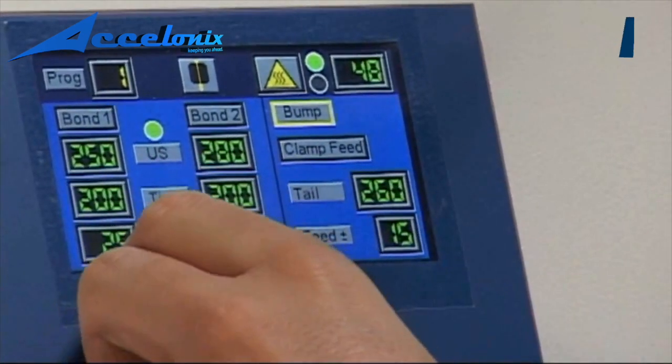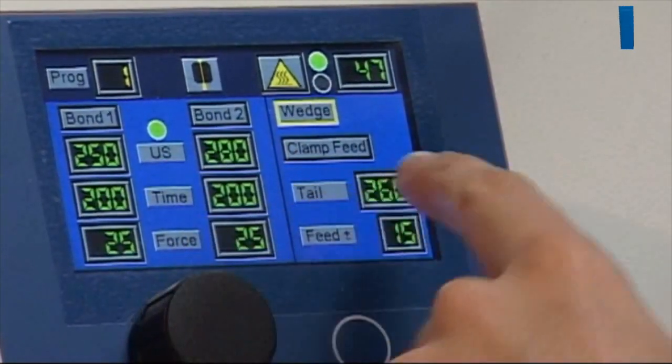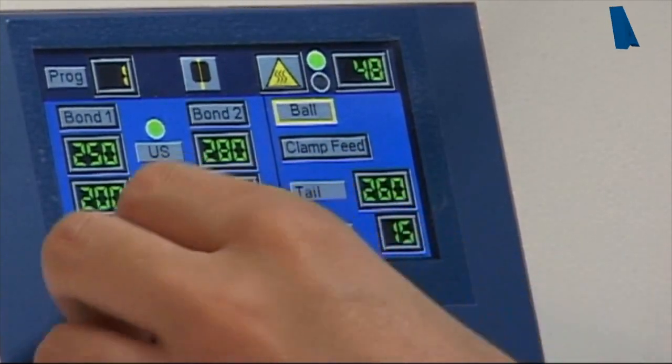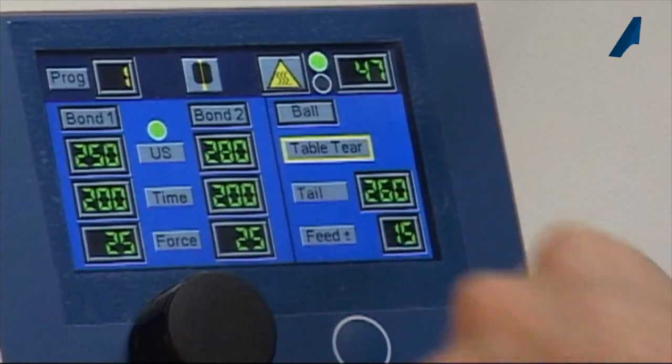One thing to always remember is that for wedge bonding, you're using the clamp feed. For ball bonding, you're using the table tear mode.